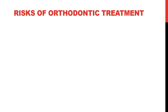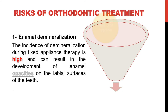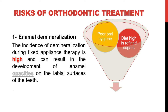What are the risks that can be associated with orthodontic treatment? The first risk is enamel demineralization. The incidence of demineralization during fixed appliance therapy is high and it can result in the development of enamel opacities on the labial surfaces of the teeth. There are two main etiological factors: poor oral hygiene and a diet high in refined sugars. When both of these factors are combined over the long term they will inevitably result in demineralization and permanent marking of the teeth.